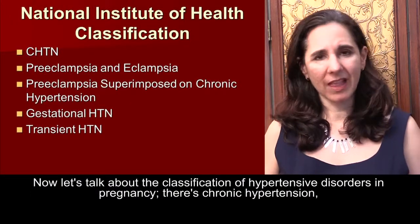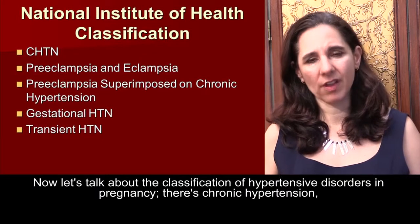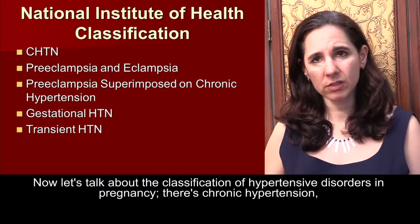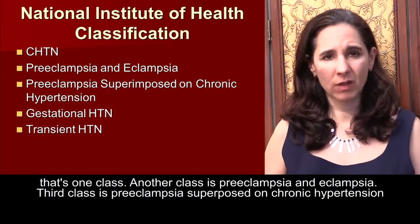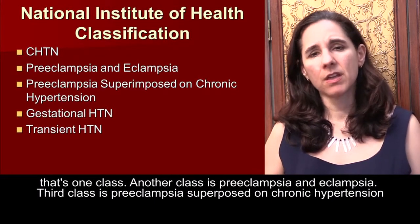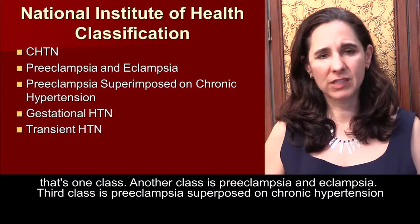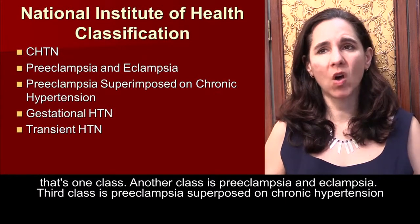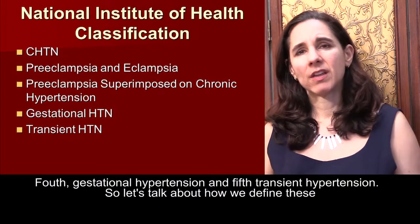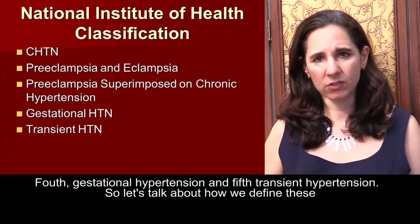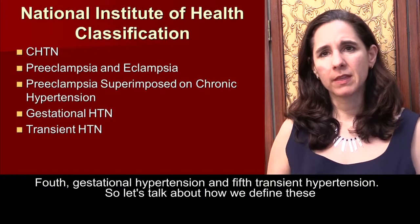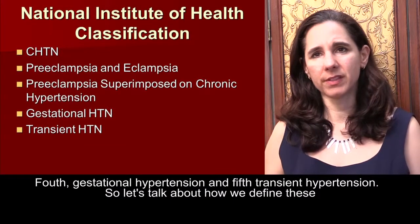Now let's talk about the classification of hypertensive disorders in pregnancy. There are five classes: first, chronic hypertension; second, preeclampsia and eclampsia; third, preeclampsia superimposed on chronic hypertension; fourth, gestational hypertension; and fifth, transient hypertension.